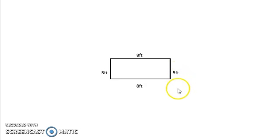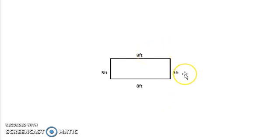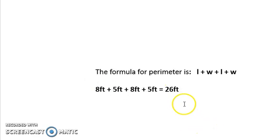Now, again, let's incorporate our formula for the perimeter of a rectangle. The length, which is 8 feet, plus the width, which is 5 feet, plus the length, which is 8 feet, plus the width, which is 5 feet, equals 26 feet. So Ms. Smith will have enough space for her new classroom math center.